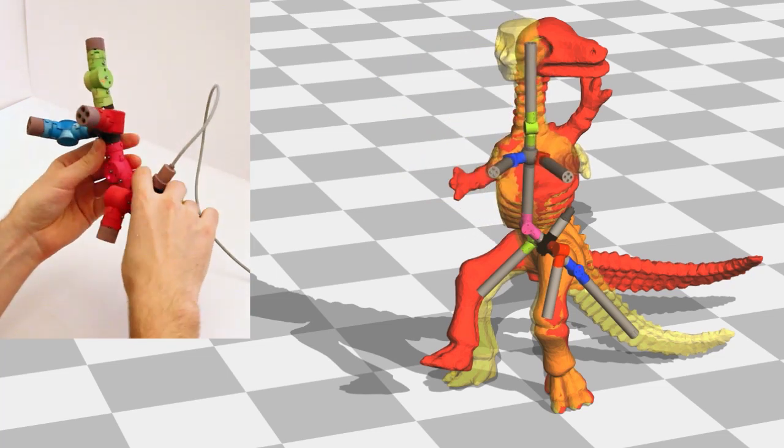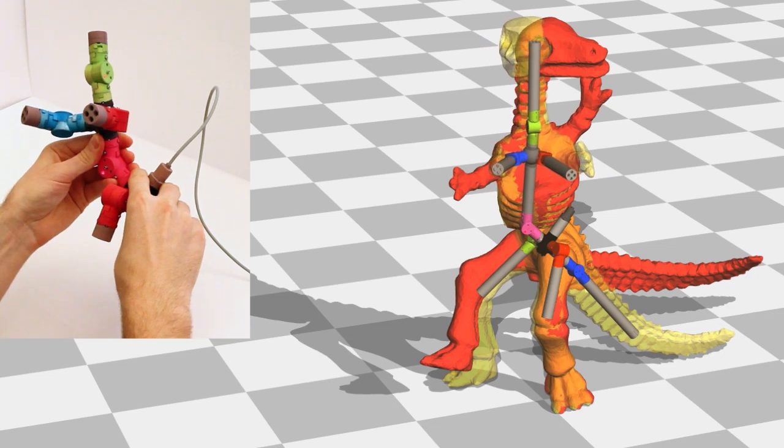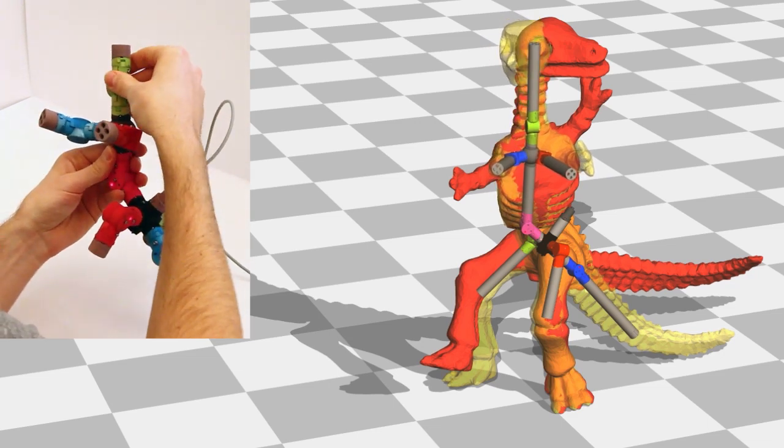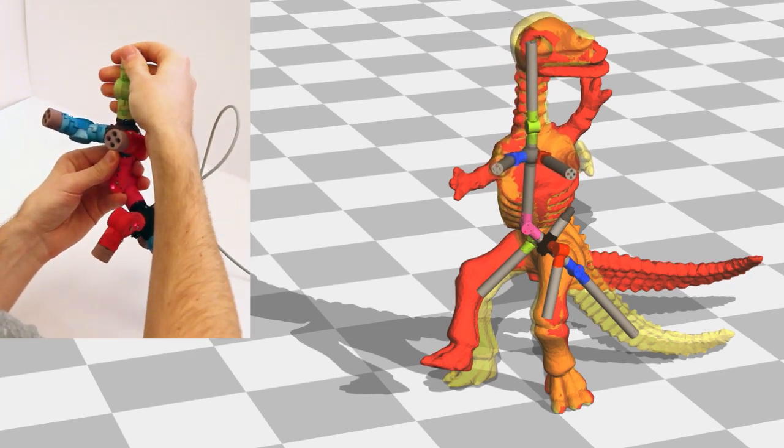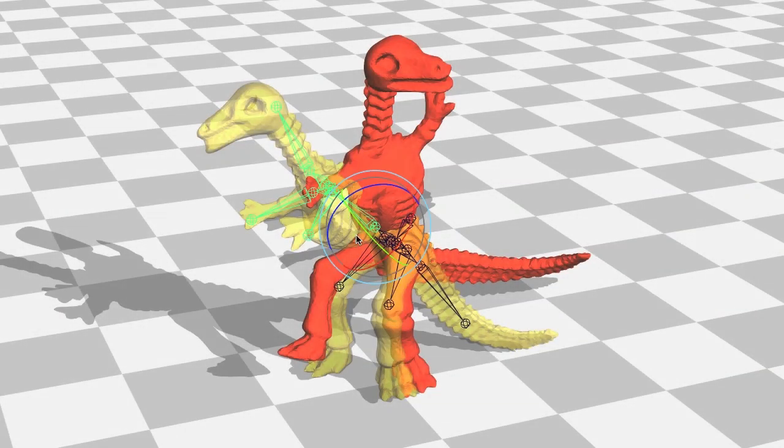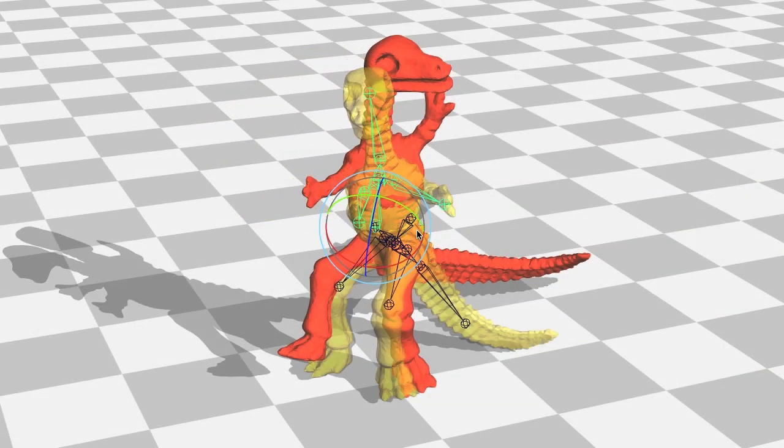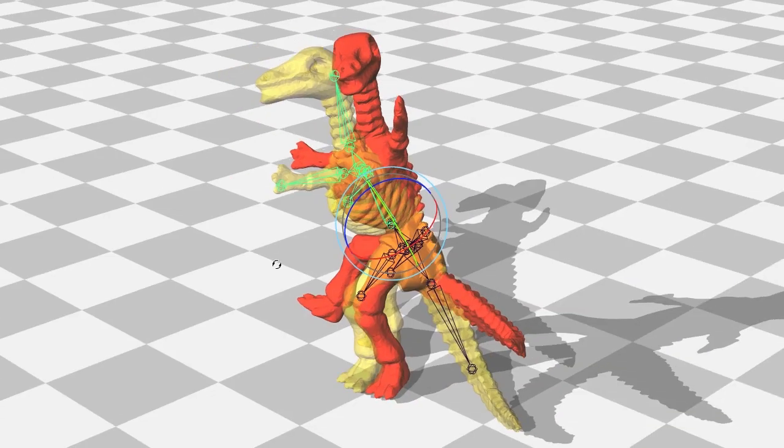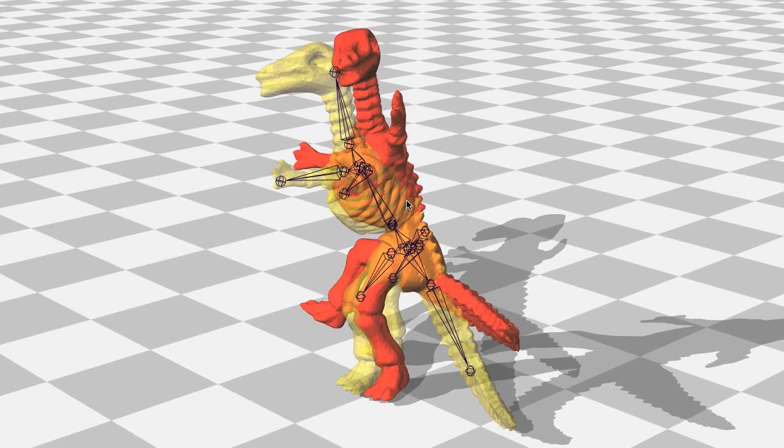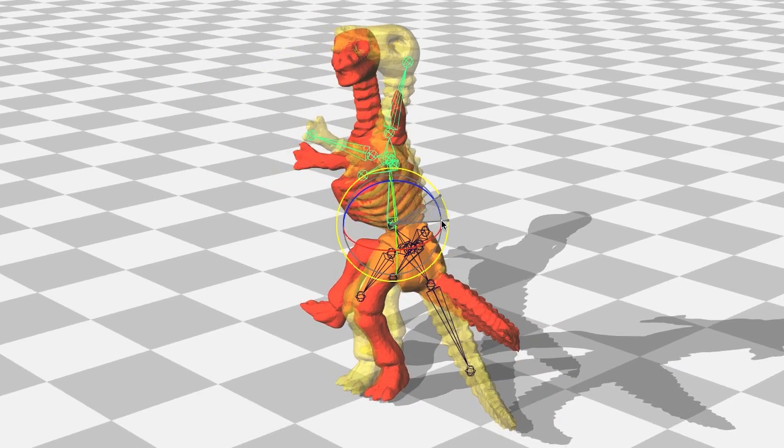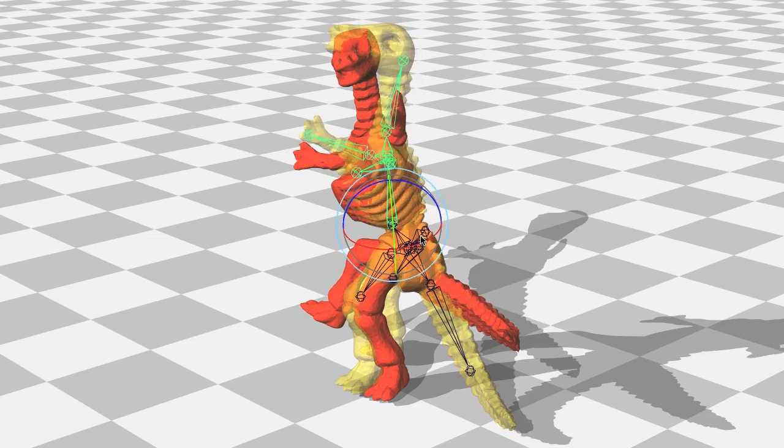We asked users to position the yellow dinosaur on top of the red target pose, using our device and using a mouse interface identical to the one in Autodesk's Maya. Our device is faster at reaching an acceptably close pose. All subjects were first time users of our device. Please see the paper for more details.